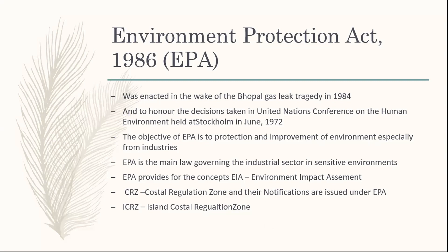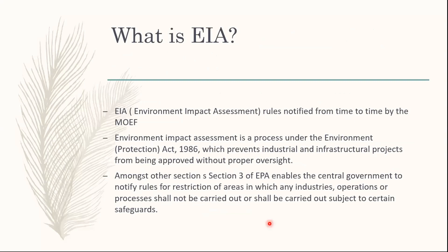EIA — Environmental Impact Assessment — requires that any industry or company wanting to enter into a manufacturing concern that harms the environment must conduct a self-assessment and submit it to the government for a prior environment clearance. This EIA file is mostly cleared by the MOEF. The industries conducting the EIA must also submit reports on how to reduce or alleviate the damages they will cause to the environment. EIA is one of the biggest notifications under EPA. Section 3 of the EPA is the enabling section for the government to notify the EIA rules.